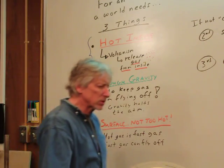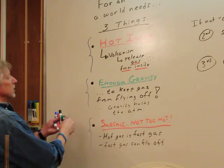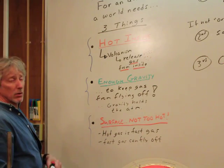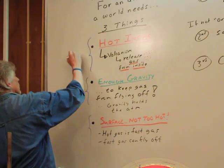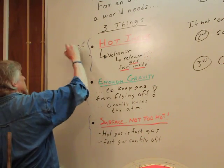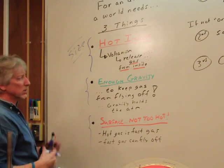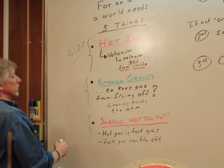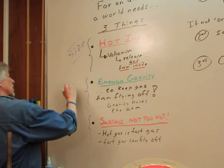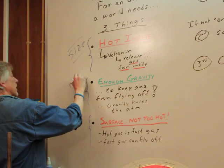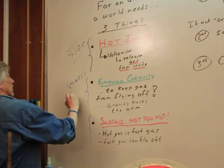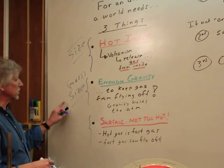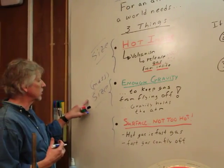So, what determines these things? To be hot inside, age is one thing. Eventually, it'll cool. Size is going to be a key factor. Something larger is going to retain its heat longer. Have more radioactive material to decay longer. Enough gravity. Well, size is also related. It's mass. Size is related to how much stuff is there. Density, some other factors. So that's connected too, isn't it?